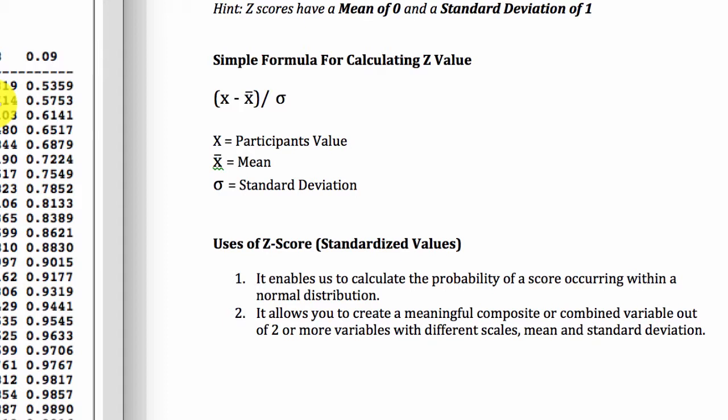There is a second use of Z score, which is normally the reason people use it in SPSS because it allows you to create a meaningful composite or combined variable out of two or more variables with different scales, mean and standard deviation. A good example of such is if you have 10 questions measuring job satisfaction. Five of those questions are measured on a scale of 1 to 5 and the other five questions are measured on a scale of 1 to 10.